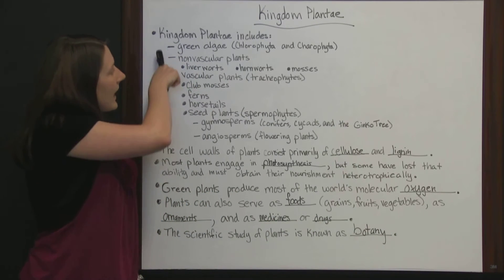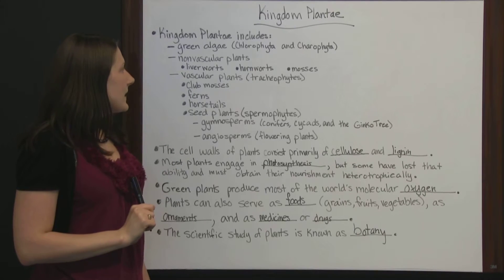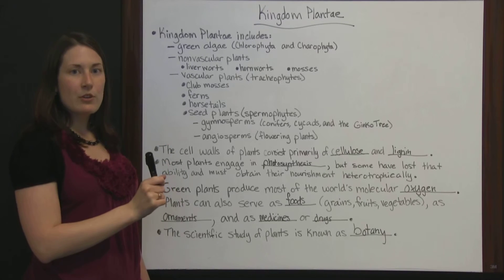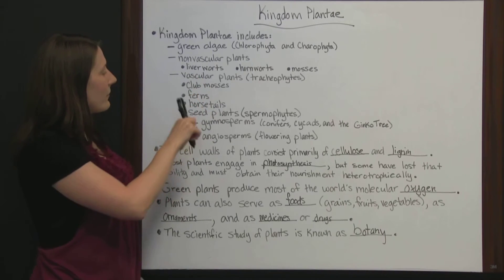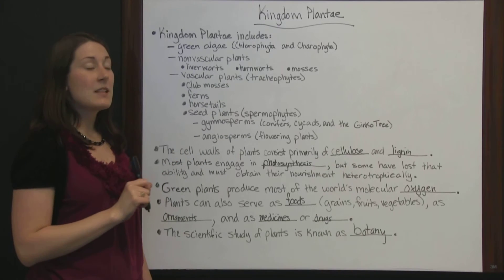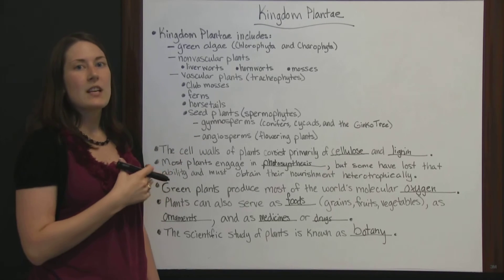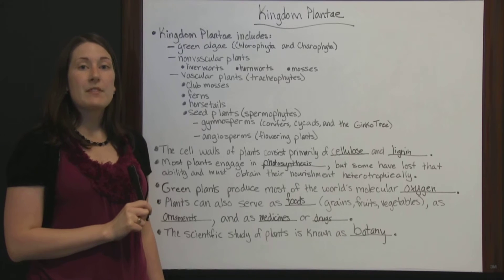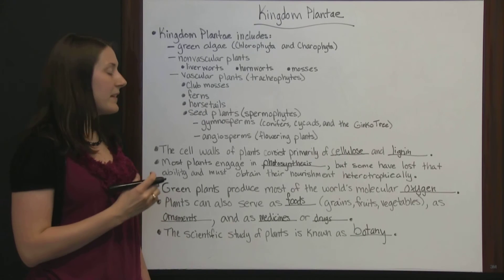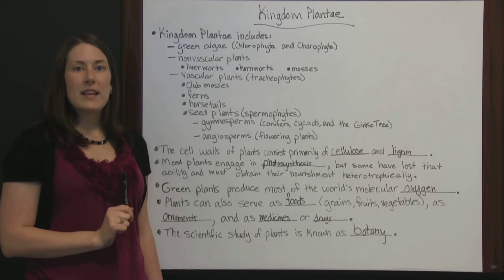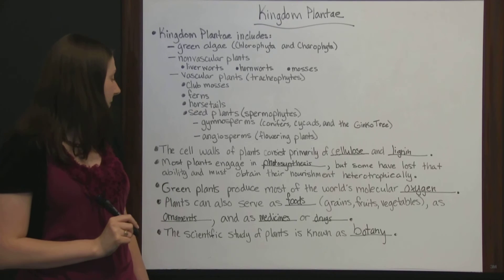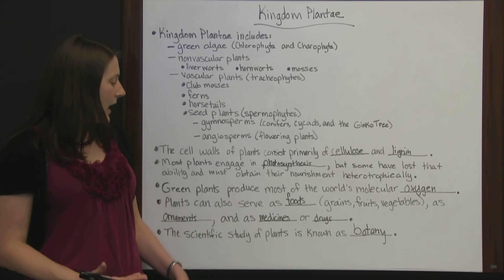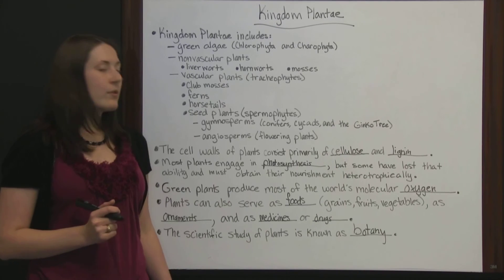There are lots of different categories in Kingdom Plantae. The differences are based on whether they are green algae, whether they have veins to transport nutrients, and further divisions within those groups. Keep in mind that plant cell walls are made up of cellulose and lignin — unlike fungi, which have cell walls made of chitin. Most plants engage in photosynthesis, and plants have many uses: as food, as ornaments, and for medicines.